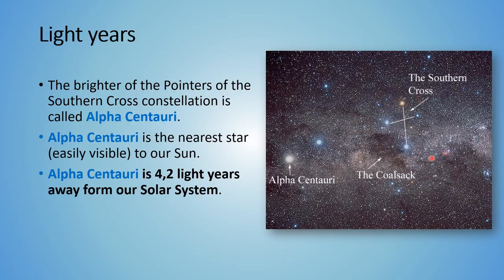If you look at the Southern Cross at night with the two pointers, you will see that one pointer is brighter than the other. The brighter one of the two pointers of the Southern Cross constellation is called Alpha Centauri. Alpha Centauri is a very special star to us because it is the nearest star to our sun, and the distance from our sun to Alpha Centauri is about 4.2 light years — so it's billions of kilometers away.